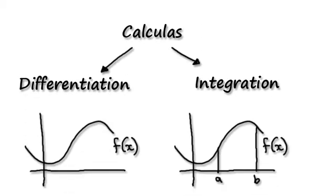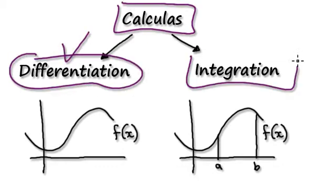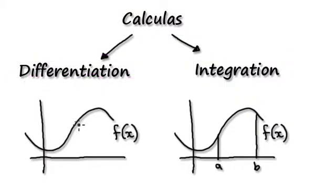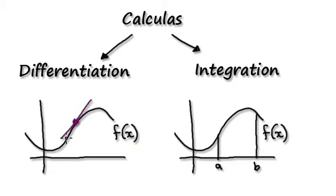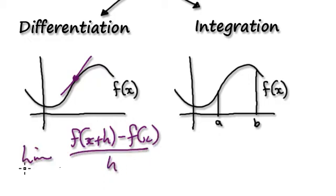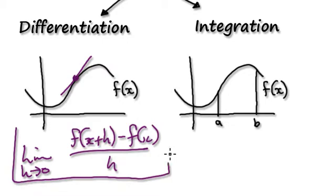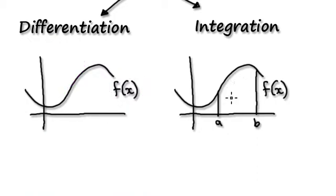Now we're going to move on to a new topic: integration. Under calculus, there's differentiation, which we've done, and now we're going to look at integration. With differentiation, we were concerned about finding the gradient of a complicated function. With integration, we are concerned about finding the area underneath a complicated function. With differentiation, we developed a technique: f(x + h) minus f(x), divide by h, and take the limit as h tends to 0. Now we need to develop a new technique to find the area underneath a complicated function.